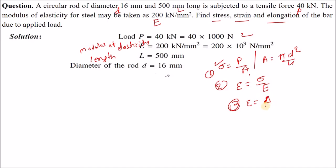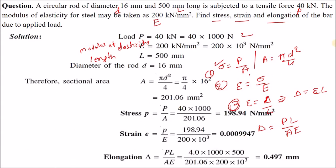Strain equals change in length divided by actual length. From that you can find delta L. Or you can use the formula delta L = P·L / (A·E), which we already discussed in lecture one. In this way you can solve the problem. Let's check — first we need to find the area, because area is required to find stress.